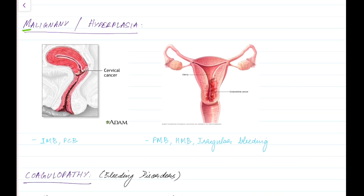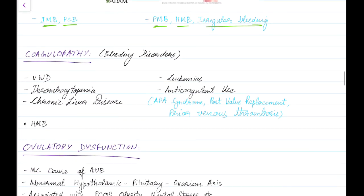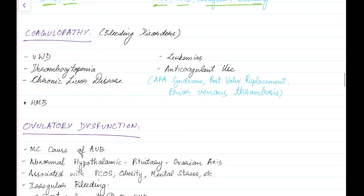Coming to the next cause — malignancy or hyperplasia. This picture shows cervical cancer. Cervical cancer can cause abnormal uterine bleeding in the form of intermenstrual bleeding and post-coital bleeding. Endometrial cancer can cause abnormal uterine bleeding in the form of postmenopausal bleeding, heavy menstrual bleeding, and irregular bleeding.